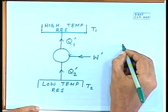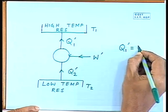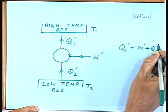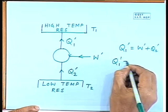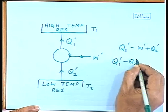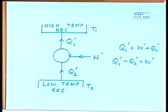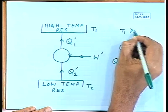This device is taking Q2' amount of heat from the low temperature reservoir and supplying Q1' amount of heat to the high temperature reservoir, while the device needs a certain amount of work W' to be supplied from outside. Applying first law of thermodynamics, we can write Q1' equals W' plus Q2', and in this case also T1 is greater than T2.